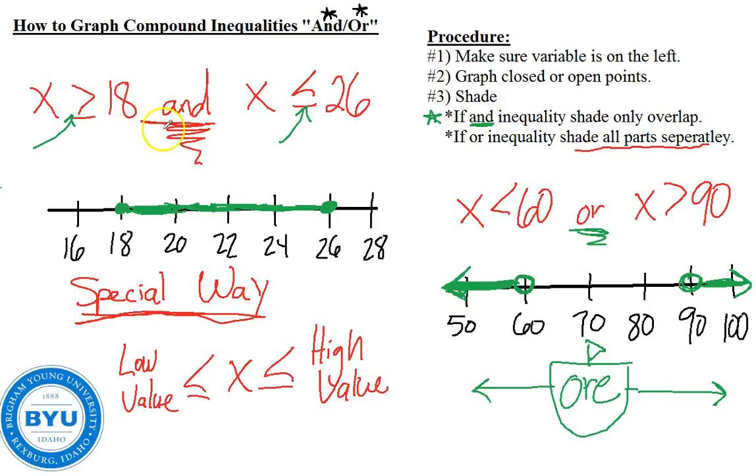This only works with and inequalities. So for example, with this missionary age inequality, I could do 18 is less than or equal to X, which is less than or equal to 26. This is a shortcut way to write an and inequality. And you should be aware that it could be written either of these two ways, with the word and or as a compound inequality. There is no shortcut way for an or inequality. We'll always use the word or.